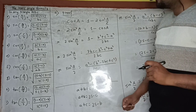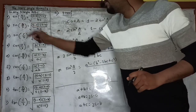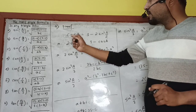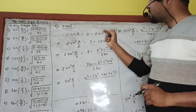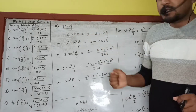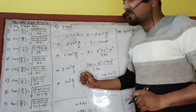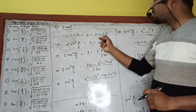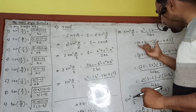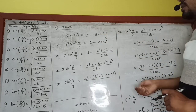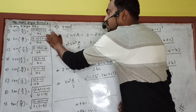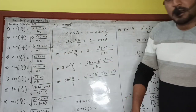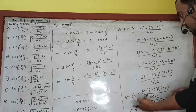Similarly, if we have to prove sin(B/2), then open the formula of cos B: cos B = 1 − 2 sin²(B/2), and follow the same process. For sin(C/2), open the formula of cos C: cos C = 1 − 2 sin²(C/2), and follow the same process. In this way, you can prove all three statements.